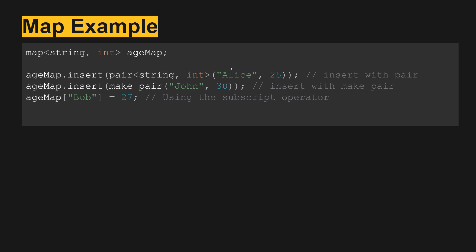Here's an example. We have map string int, age map. If we want to insert it, we use pair string int, Alice 25. We can also insert using make_pair with John comma 30. And then we can also do it directly using age map Bob equals 27.